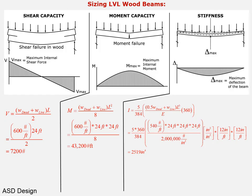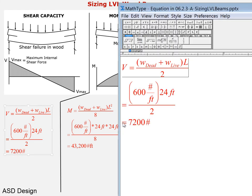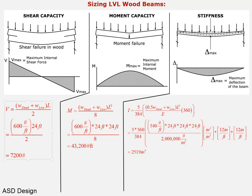So now when we look at our design equations again, we're looking at laminated veneer lumber wood beams. Shear is V = w_total × L / 2. Again there are no load factors because we're in allowed stress design. So we have 600 pounds per foot times the length which is 24 feet divided by 2, and when we crank all those numbers feet cancel feet and we end up with pounds, so it's 7200 pounds.